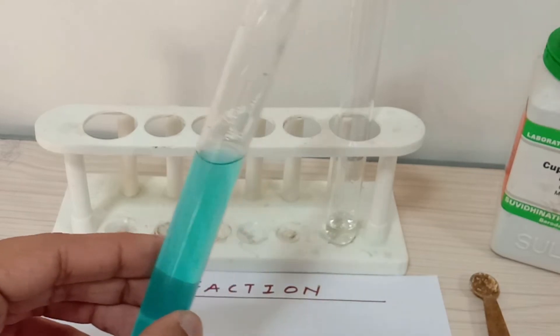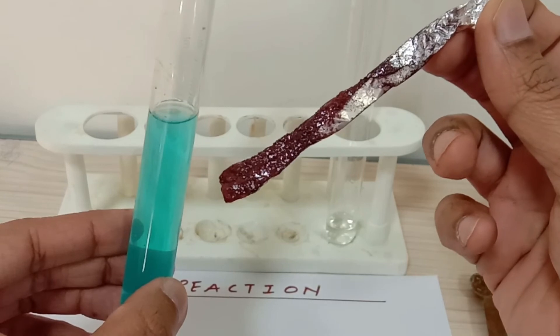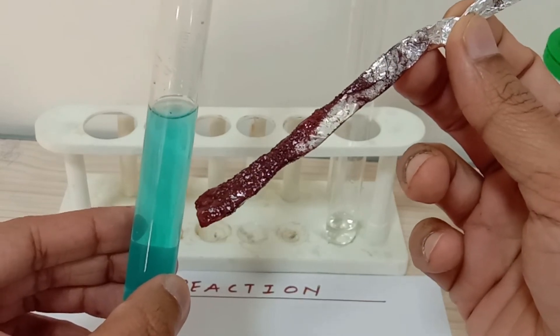You can just check it by yourself that this is dark pink color copper and it has deposited on the aluminum foil.